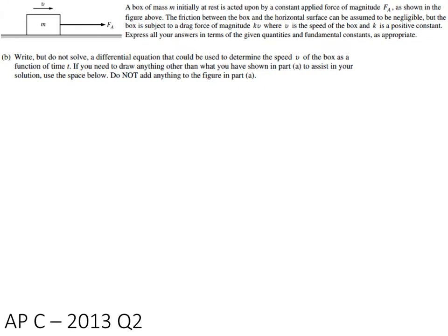Now this is where the problem starts to get a little bit trickier. It's saying write but do not solve a differential equation to determine the speed of the box as a function of time. So they're straight up telling us differential equation. In particular, when you see these two together, differential speed, what you want to remember is that instead of doing, you're basically going to start with F net equals MA, except you're going to rewrite this as M DV over DT.